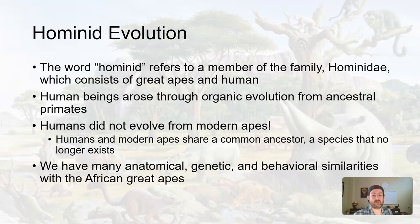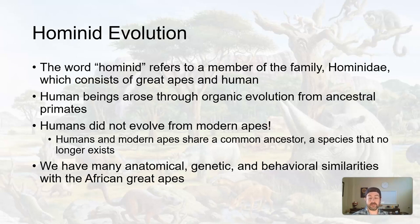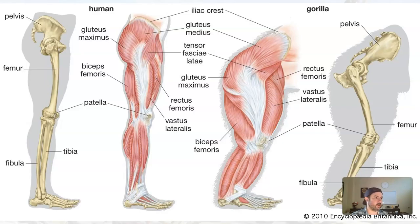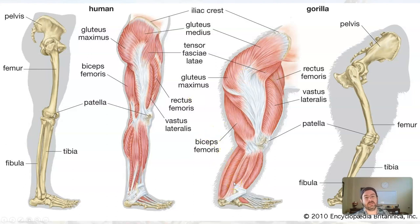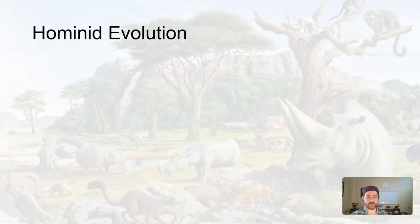We have many anatomical, genetic, and behavioral similarities to the western great apes — family oriented, use tools, those sorts of things. Anatomically, these are things we look at when trying to put together an evolutionary tree. If we look at the structure of the human leg bones and muscles and gorillas, it's almost the same — other than gorillas are just built and will rip you apart — but the structure is all the same. Similar muscles, similar bones — there had to be an ancestor somewhere in there.